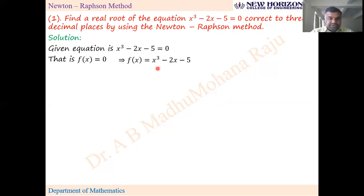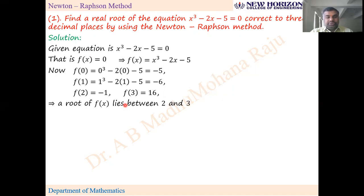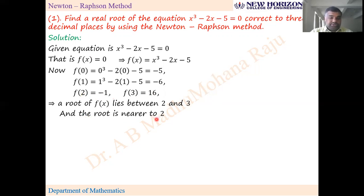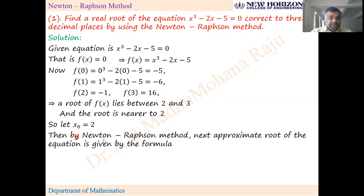Let f(x) = 0. By trial and error method, guess where it is positive and where it is negative. At x = 2 it is negative, at x = 3 it is positive, so the root lies between 2 and 3. At 3 the value is 16, at 2 it is -1, so nearer to zero is -1, meaning the root is nearer to 2. So let x₀ = 2.